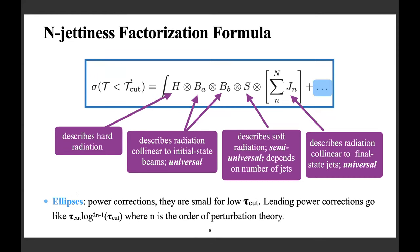The cross section below the cutoff is given by a factorization formula — a convolution of several functions describing all sorts of radiation. The hard function describes hard radiation and turns out to be the finite part of the virtual corrections. There are two beam functions describing radiation collinear to the initial-state beams — these are universal, calculated once and for all. There is a soft function describing soft radiation — semi-universal, meaning it differs if you add jets. Finally, jet functions describe radiation collinear to final-state jets and are also universal. All of these must be available at the appropriate perturbative order, and by now they all are.